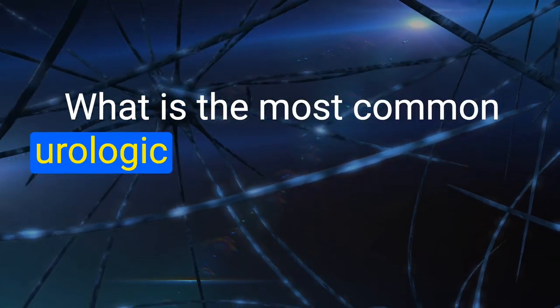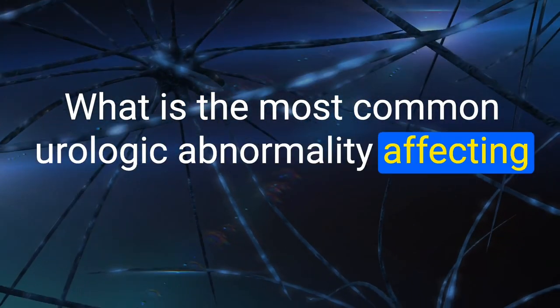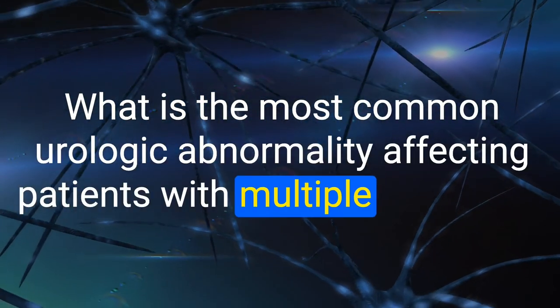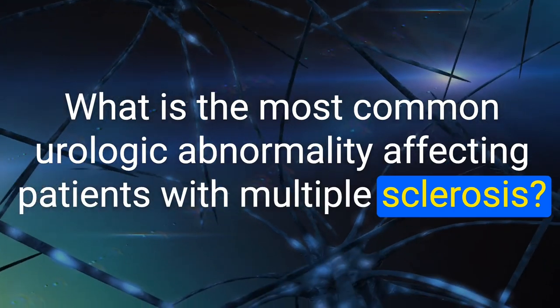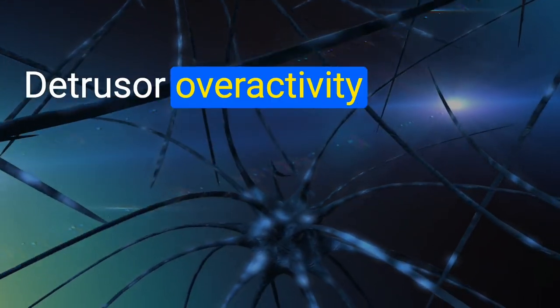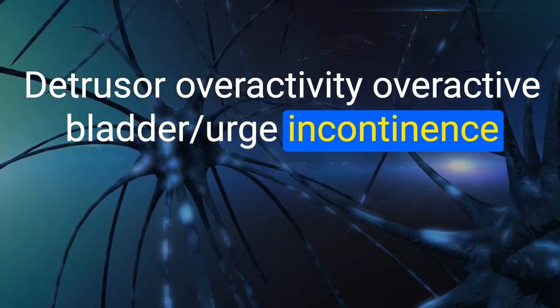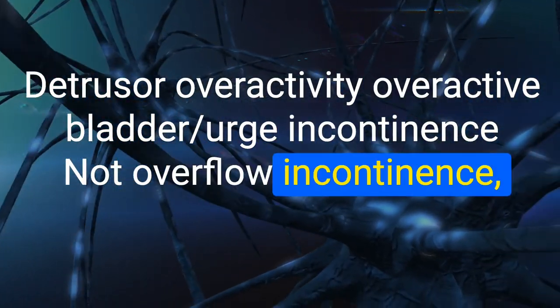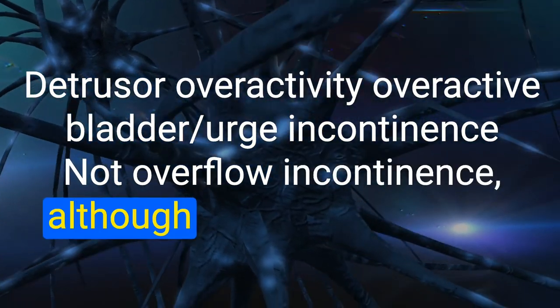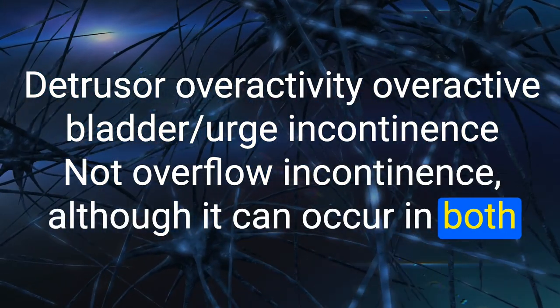31. What is the most common neurologic abnormality affecting patients with multiple sclerosis? Detrusor overactivity — overactive bladder with urge incontinence, not overflow incontinence, although both can occur.